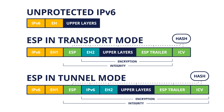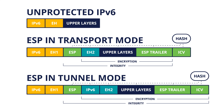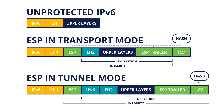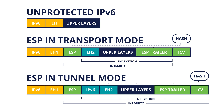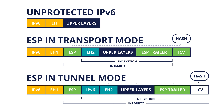Integrity is provided by means of the ICV. The destination host calculates the ICV again, using the received packet and the information that it has in the security association. Then this newly calculated ICV is compared with the received one. If they match, then nothing has changed since the packet was sent. If they are different, then something has changed en route.